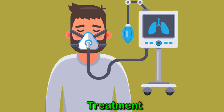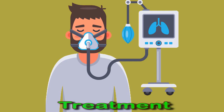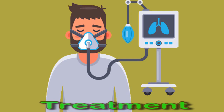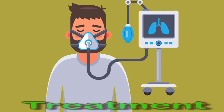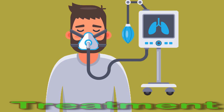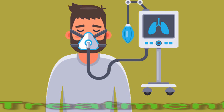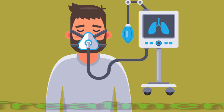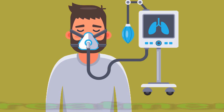In summary, respiratory depression or hypoventilation happens when the lungs do not effectively exchange oxygen and carbon dioxide. It can lead to complications such as respiratory acidosis and, without treatment, can be fatal. Causes include medical conditions that affect the brain such as stroke, and medications or recreational drugs that impair the function of the central nervous system. Anyone who suspects respiratory depression should seek emergency medical attention.